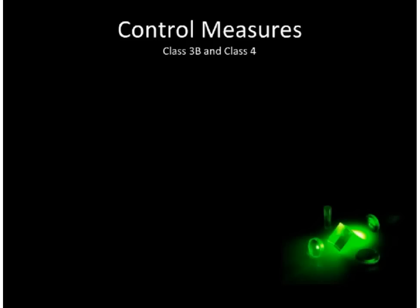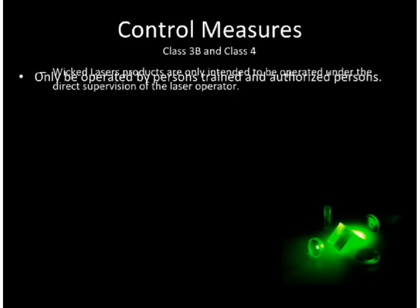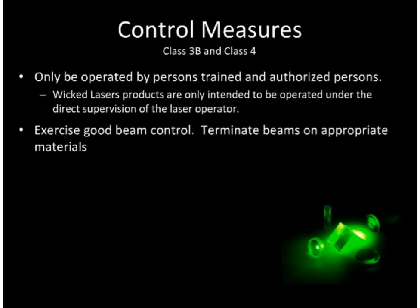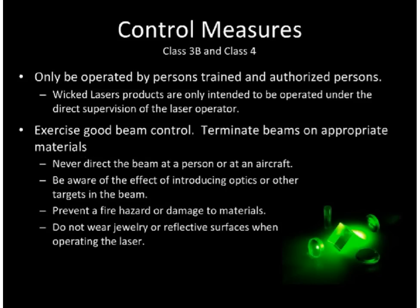At a minimum, Class 3B and 4 lasers must only be operated by trained and authorized personnel. Wicked Laser products are only intended to be operated under the direct supervision of the laser operator. Exercise good beam control. Terminate beams on appropriate materials. Never direct the beam at persons or an aircraft. Be aware of where your beam is going and the effect of introducing optics or other targets into the beam. Know where reflections might redirect the beam. Prevent a fire hazard or damage to materials — Class 4 and some Class 3 beams can char, burn, or ignite materials. Especially avoid exposing dark, thin, and combustible materials.